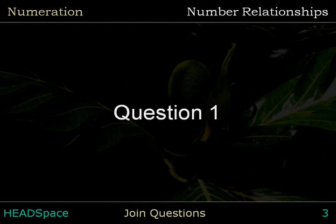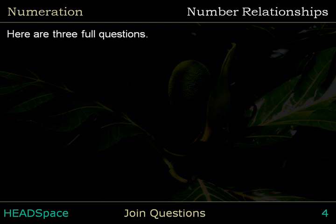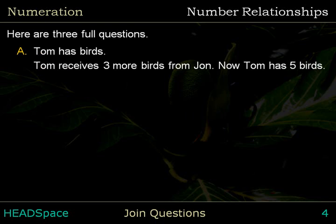Question 1. Here are three related questions. Tom has some birds. Tom receives three more birds from John. Now, Tom has five birds. How many did he have to start?